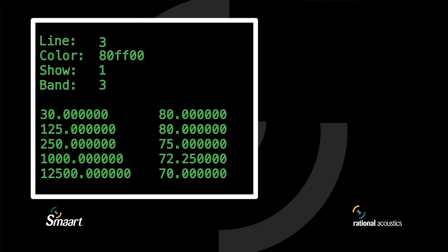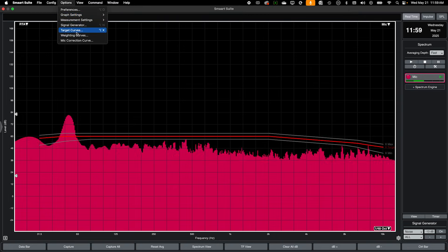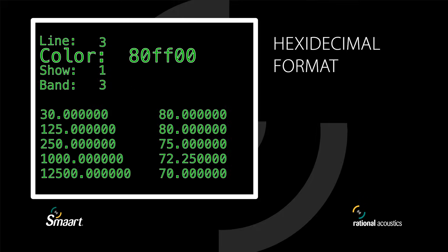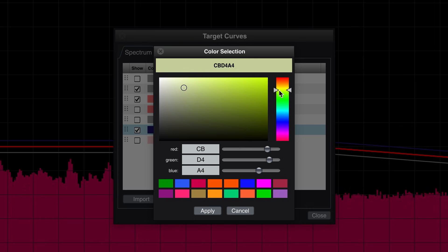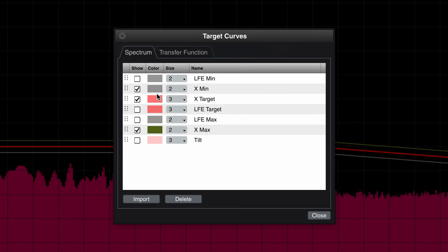Spectrum target curves are formatted with four heading lines and two columns of data in frequency-level format, separated by a tab character. Line sets the line thickness of the target curve using values 1 through 5. It can also be set from SMART's target curves menu, accessible via hotkey or through the options menu. Color is the color of the target curve in hex format, and can be changed from within the target curves menu. Show Line determines whether the target curve will be shown by default, denoted in binary — 1 for yes and 0 for no.